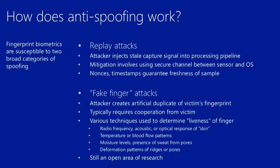Most modern fingerprint sensors use advanced techniques to detect fake fingers. They use technologies like radio, acoustic, or optical frequencies to get an image of the skin. They look for warmth on the finger, blood flow patterns, moisture levels — fake fingers have different moisture patterns — presence of sweat from pores, and non-uniform deformation patterns of rigid pores. Fake fingers have different patterns than real fingers. This is still an open area of research, but the industry has advanced quite a lot. It's not as easy as shown in movies to create fake fingers and use them on digital systems.